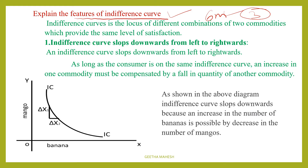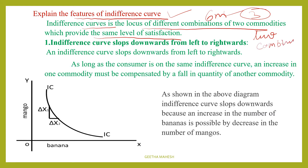First, indifference curve meaning: it is a locus of different combinations of two commodities which provide the same level of satisfaction. Here are two commodities, and the two commodities are different. We can use different combination groups — all combinations — at the same level of satisfaction.